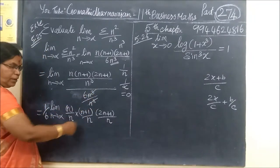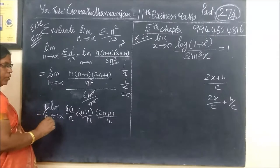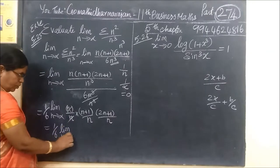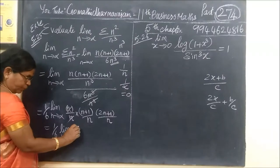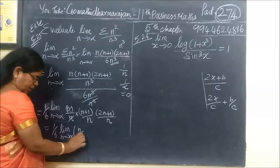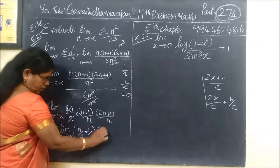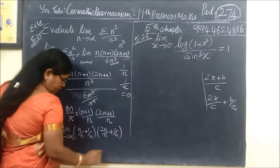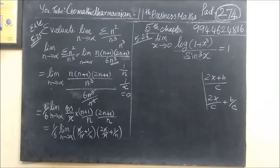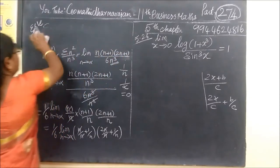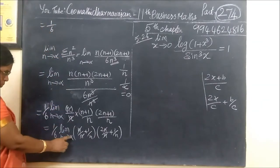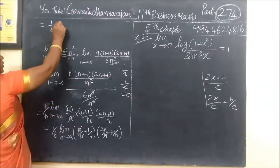So this n cubed gives 1 by 6. Taking 1 by 6 outside, the limit n tends to infinity remains. So n by n is just 1, and we are left with the remaining bracket.